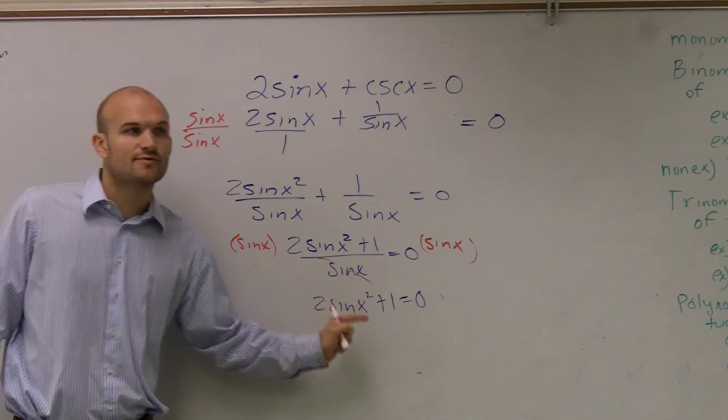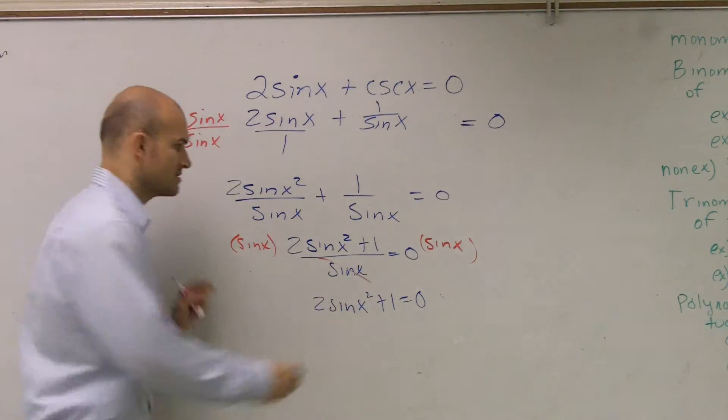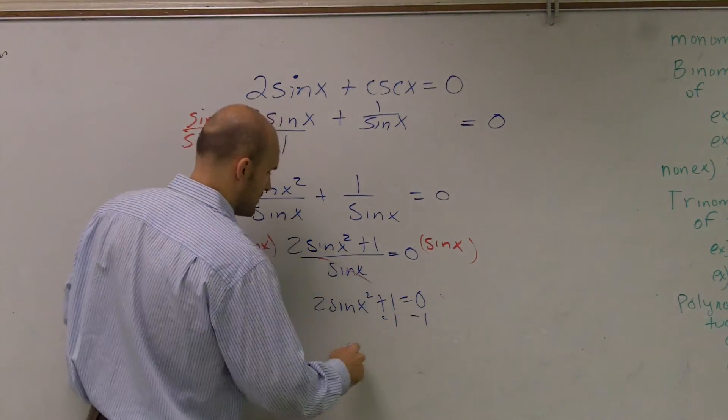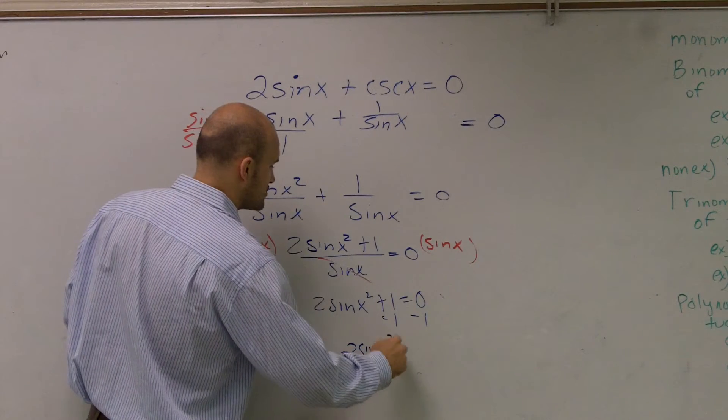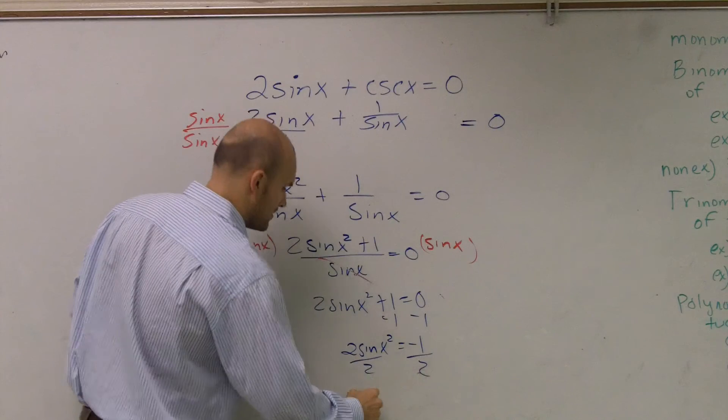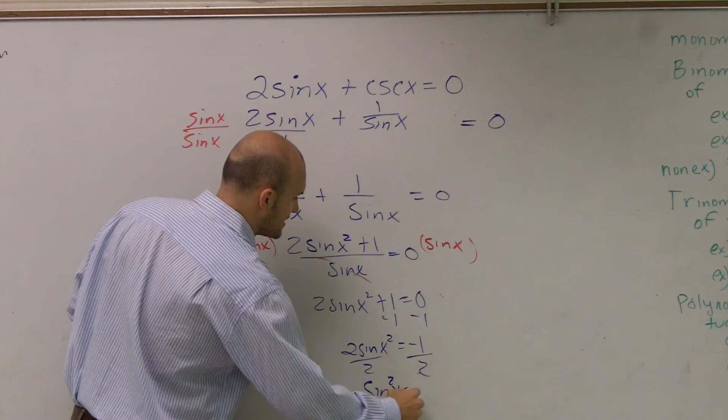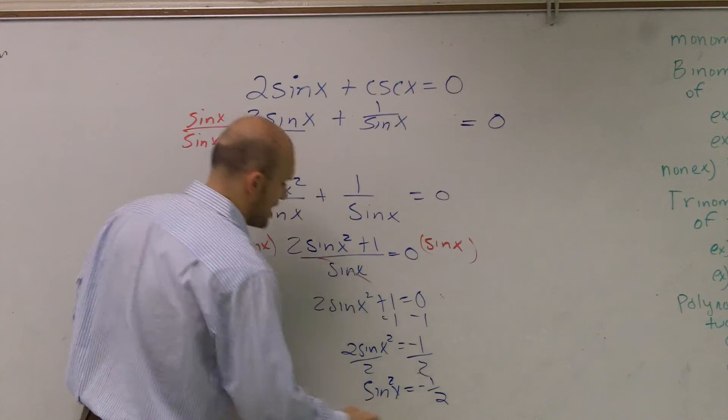Now, we'll just use like we've been doing for other problems. I'm just going to solve for x. So I'm going to subtract 1. And I get 2 sine of x squared equals negative 1 divided by 2. And I get sine squared of x equals negative 1 half.